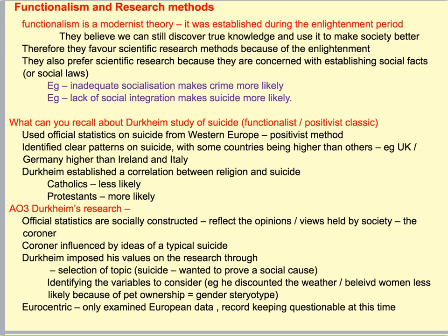They also prefer scientific research because they want to establish social facts or social laws through studying society scientifically. So you're looking for objective research methods: official statistics, questionnaires with closed responses, structured interviews — the most objective data sources you can get. A social law might be that inadequate socialisation makes crime more likely. To establish that, you might look at the social backgrounds of people in jail — for example, 40% went through the foster care system, suggesting inadequate socialisation. That creates the social law that inadequate socialisation makes crime more likely.